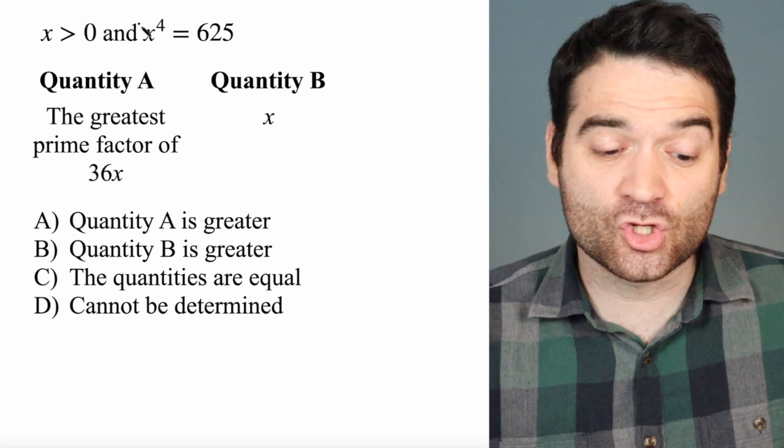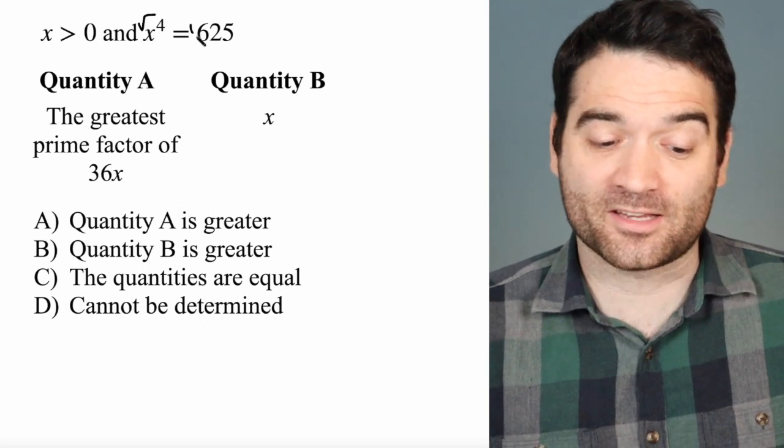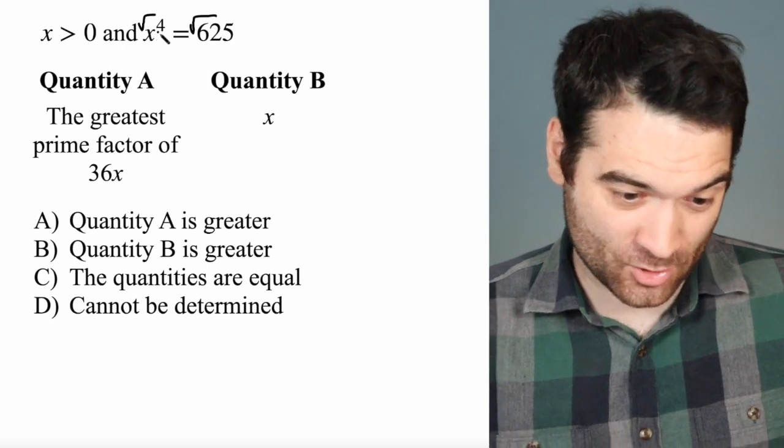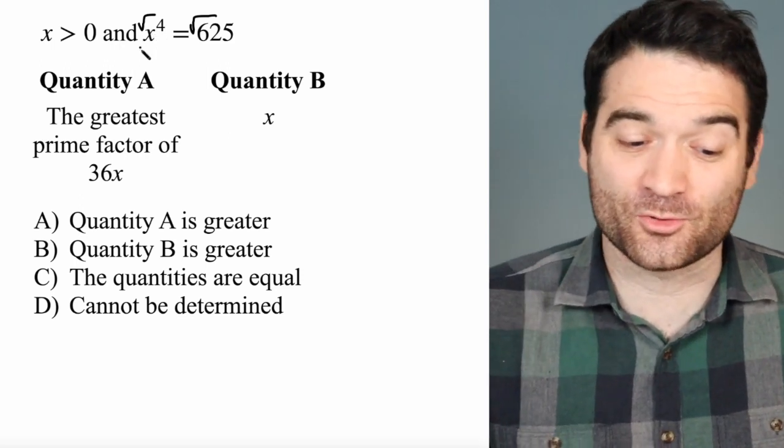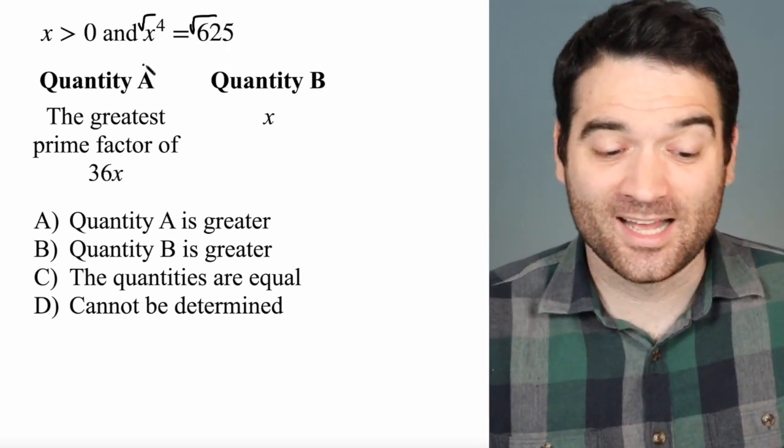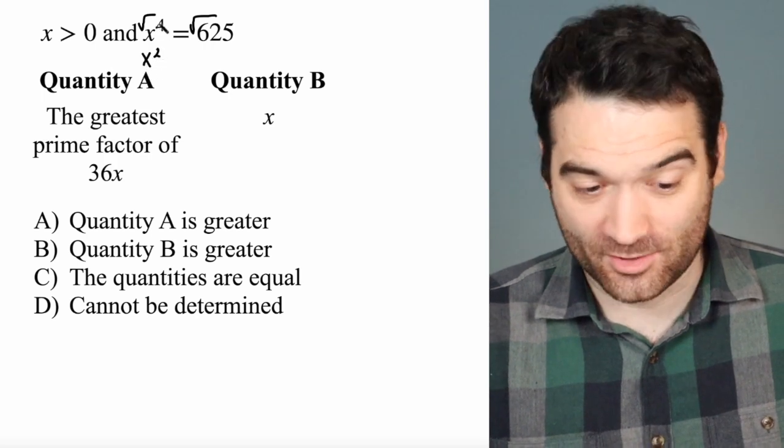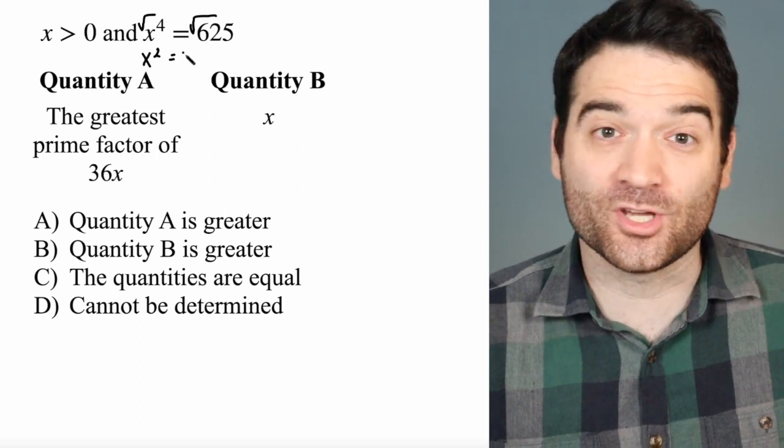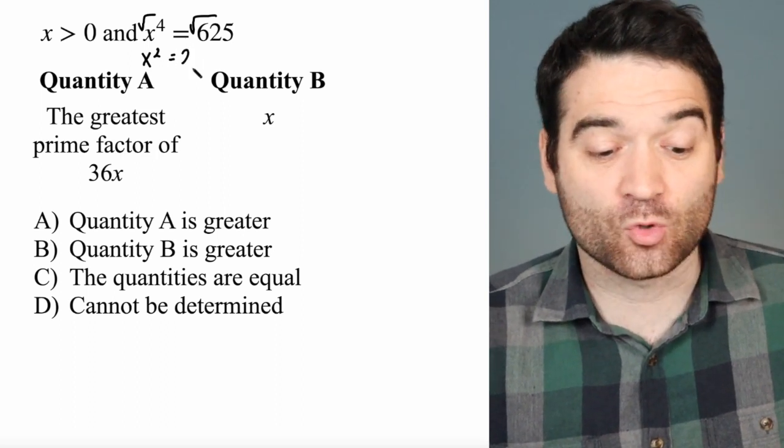is say that the square root of x to the power of 4 is going to be x squared. So if I take the square root of both sides, I can say that x squared is equal to the square root of 625, which is, use your calculator, 25.